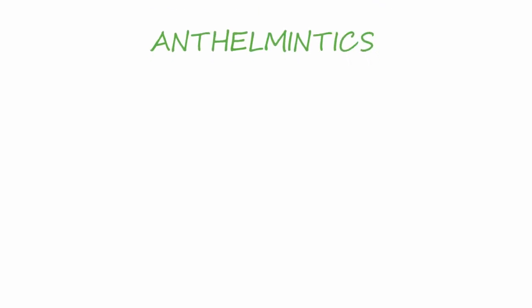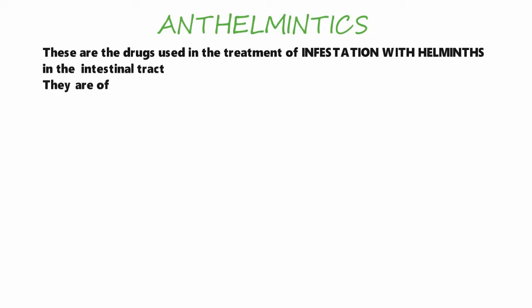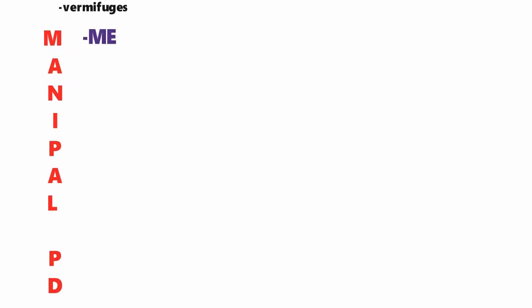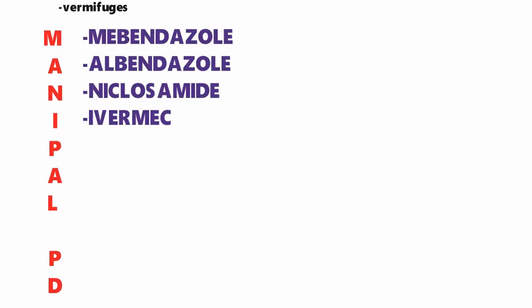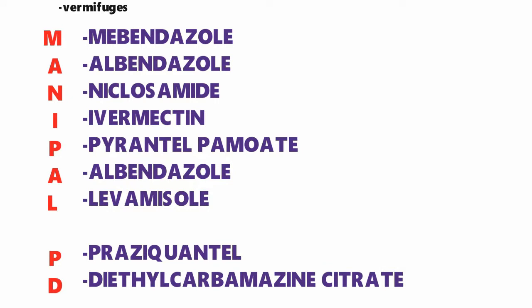Hello friends, welcome to another video. In this video we will discuss about the anti-helminthic drugs. These are the drugs used in the treatment of infestation with helminths in the intestinal tract. They are of two types: vermicides, which kill the worms, and vermifuges, which expel the worms from the body. The drugs included in anti-helminthics are mebendazole, albendazole, niclosamide, ivermectin, pyrantel pamoate, levamisole, praziquantel, and diethylcarbamazine citrate.